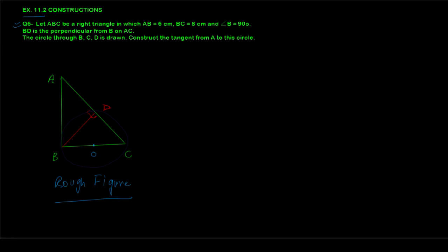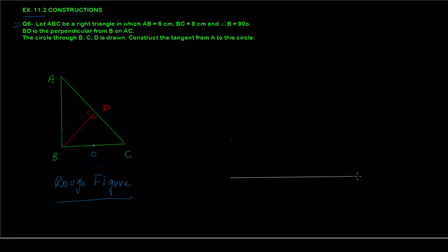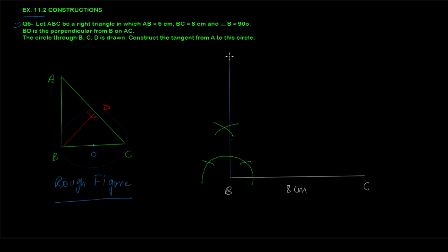First we construct triangle ABC. Take a line BC of 8 centimeters. Now construct a 90-degree angle at B — use the proper compass procedure, not a protractor. Construct an arc, then bisect it through the standard steps, to get a 90-degree ray BX at B. Don't use a protractor since this is a construction problem.